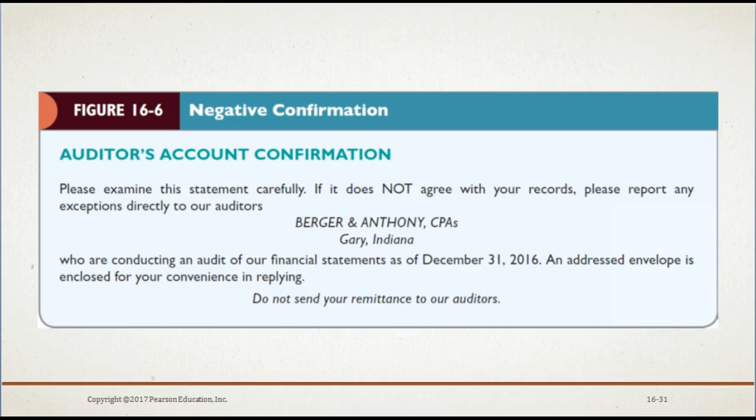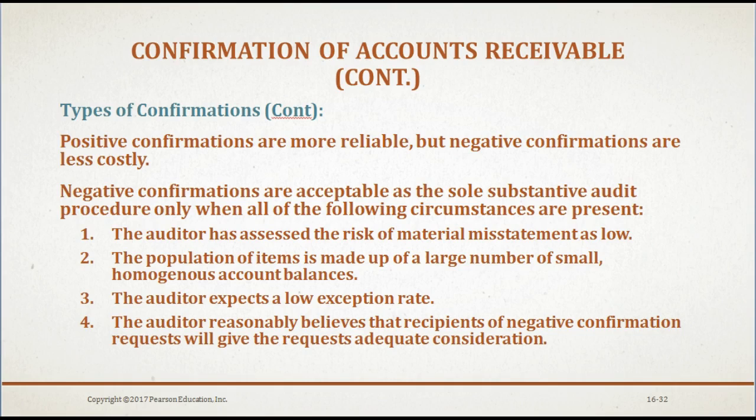Positive confirmations are more reliable, but negative confirmations are less costly. Negative confirmations are acceptable as the sole substantive audit procedure only when all of the following are present: the auditor has assessed the risk of material misstatement as low; the population consists of a large number of small, homogeneous account balances; the auditor expects a low exception rate; and the auditor reasonably believes recipients will give the request adequate consideration.